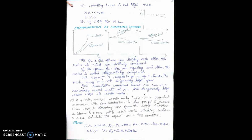For compound motor characteristics, there are two operations: cumulative and differential. In cumulative operation, the flux produced by both field windings is in the same direction and magnitude. In differential operation, the fluxes are in opposite directions. A cumulative compound motor can achieve variable speed, but not as much as a series motor. Among the three motors, the series motor offers the most variable speed, while the DC shunt motor is preferred for constant speed applications due to its naturally constant speed operation.